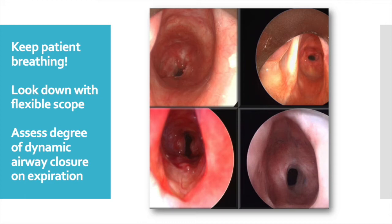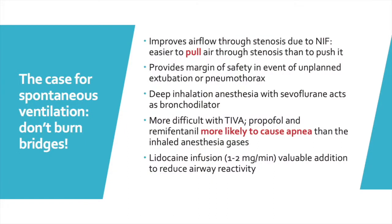This can be a very important part of the surgeon's or pulmonologist's decision making about whether or not to insert an airway stent, use laser, use balloon dilation, or otherwise decide how to fix the airway problem. These photos all show the glottic opening and examples of subglottic stenosis. Spontaneous ventilation tends to improve airflow through an area of stenosis because it's easier for the patient to pull air in than it is for you to push it in.